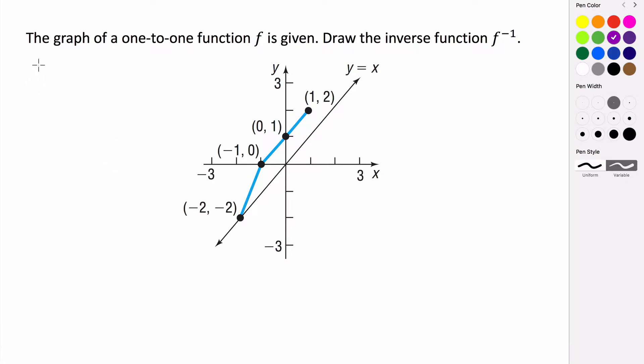If we're thinking about that in terms of ordered pairs, we're given some ordered pair (x, y). If this ordered pair is on my function f, then on the inverse, on the inverse of f, we should have the ordered pair (y, x). You replace the x and y coordinates, and that would be on the inverse of our function.